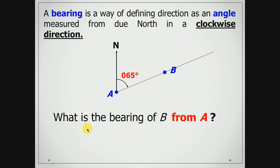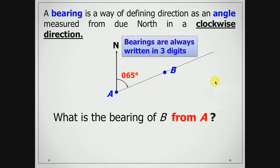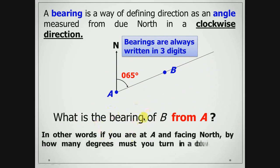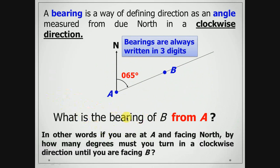Now let's say that angle is actually 65 degrees. Notice this 65 degrees is written with a zero at the front. This is because bearings are always written in three digits. So when we give the bearing of B from A, we would say it's 065 degrees. What this actually means: if you're standing facing north from A, by how many degrees would you have to turn in a clockwise direction until you actually reach B? That's what the bearing actually means.